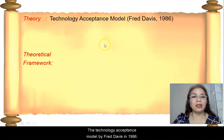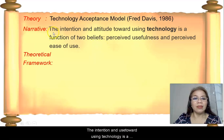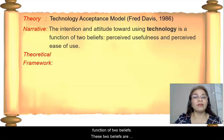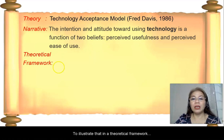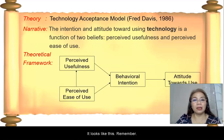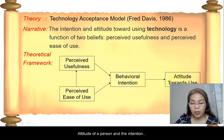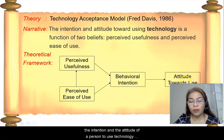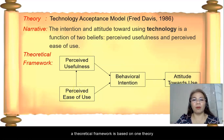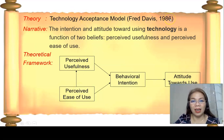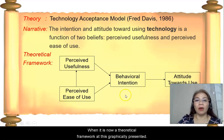Another example, the technology acceptance model by Fred Davis in 1986. According to this model, the intention and use toward using technology is a function of two beliefs. These two beliefs are perceived usefulness and perceived ease of use. To illustrate that in a theoretical framework, it looks like this. Remember, the attitude and the intention of a person to use technology is defined by perceived usefulness and perceived ease of use. Take note, according to Emenda, a theoretical framework is based on one theory, and it is graphically represented.